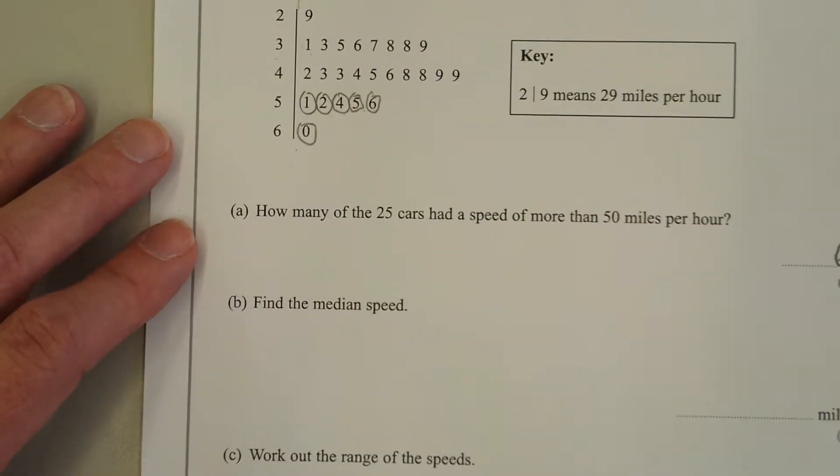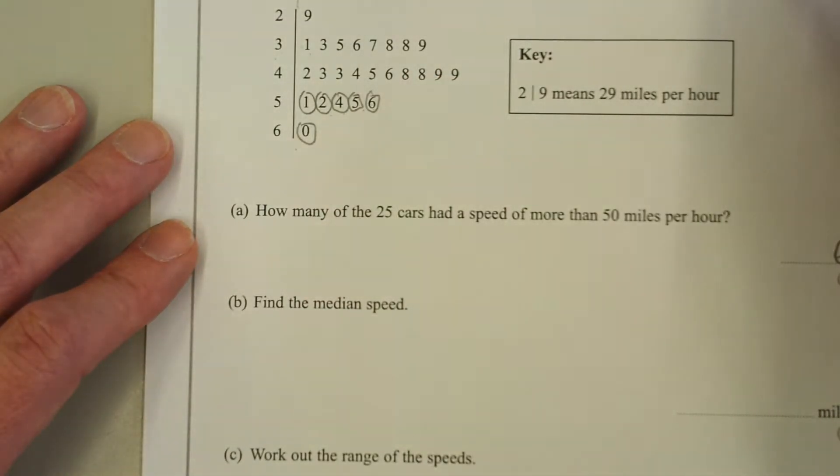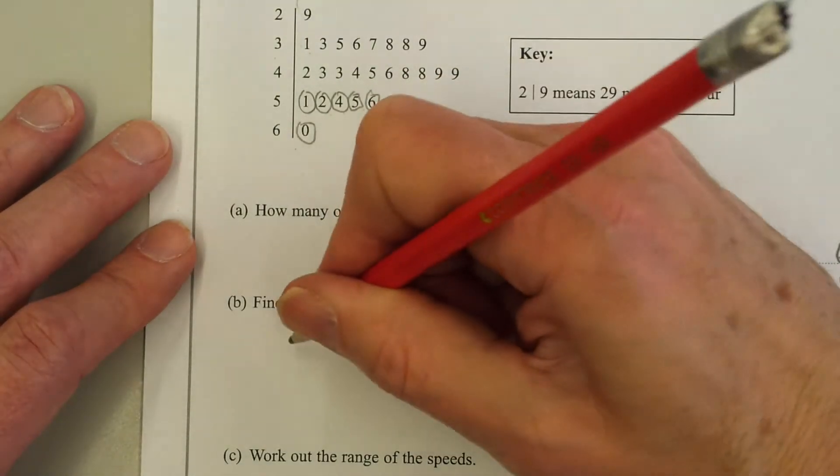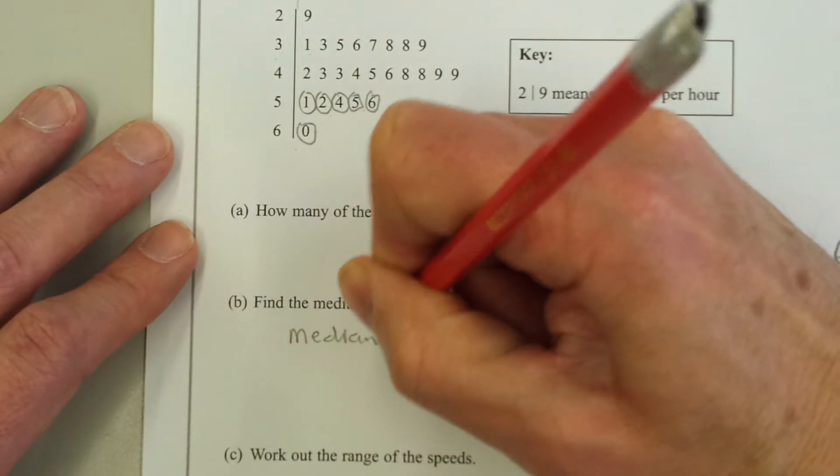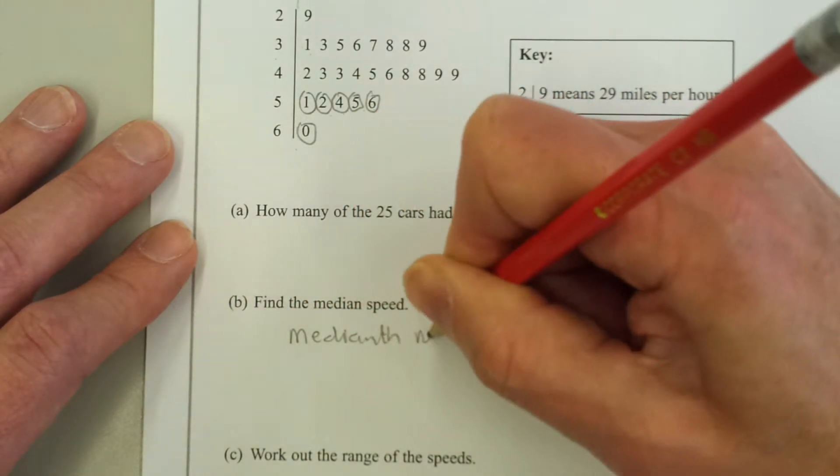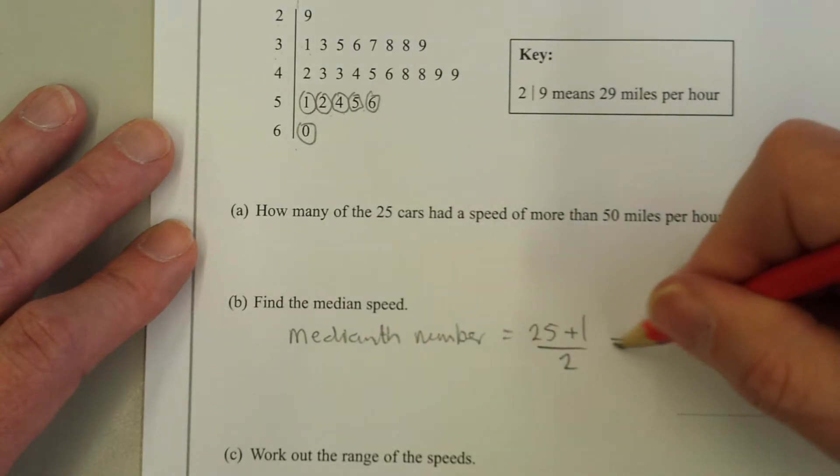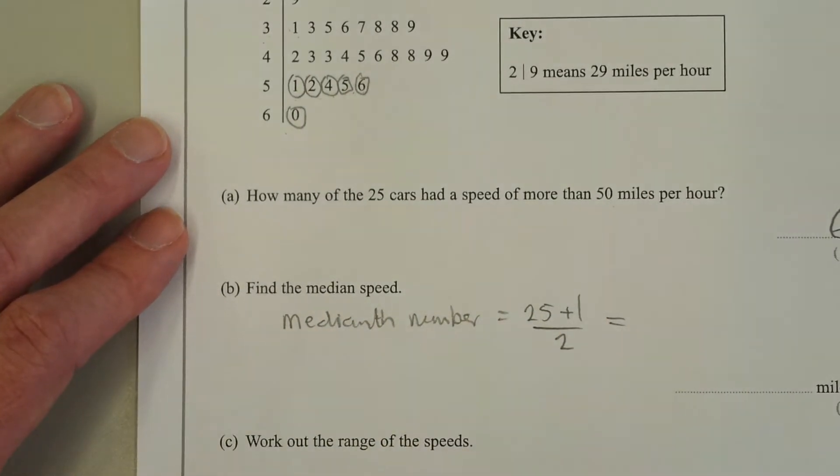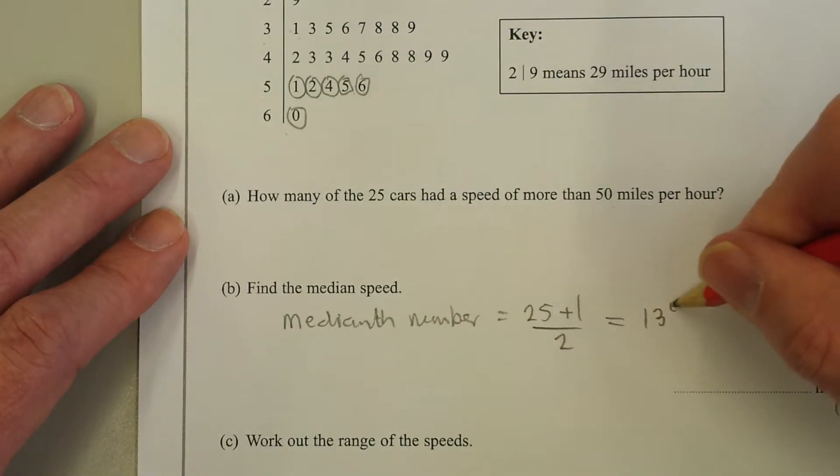To find the medianth number, what you do is add 1 to these 25. So the medianth number equals 25 add 1 divided by 2. 25 add 1 is 26, and half of that is the 13th number.